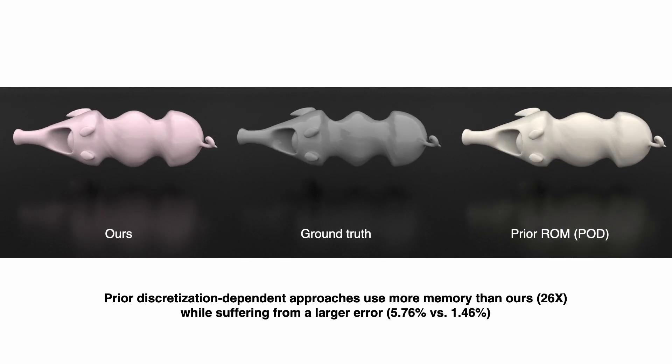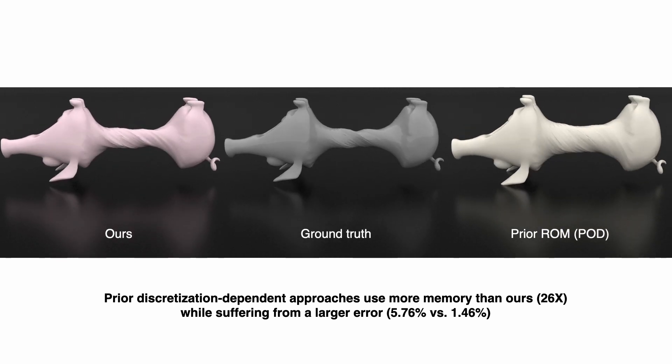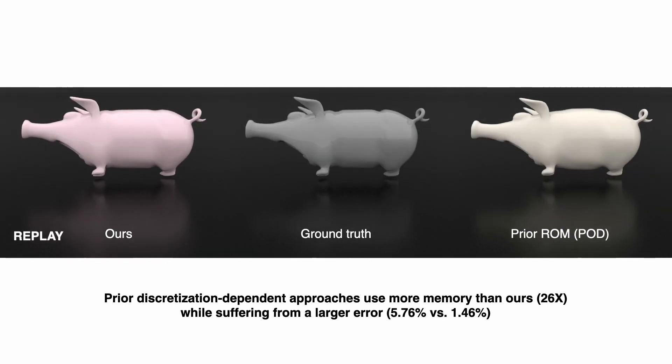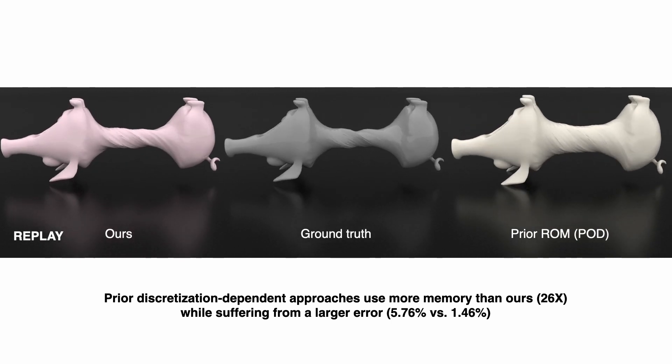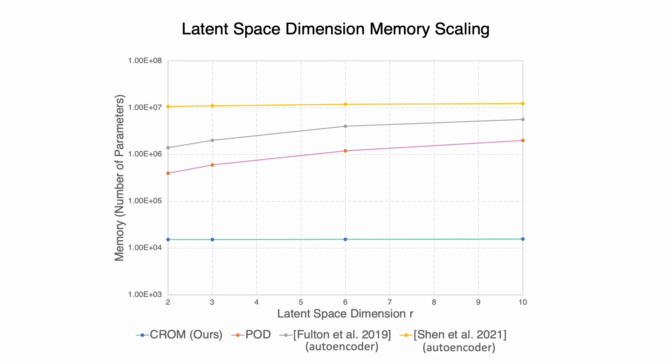Compared to our approach, prior discretization-dependent approaches used 26 times more memory than our method, while suffering from a larger error of 5.76%. Notably, our method scales favorably to the memory footprint of other methods, such as the autoencoder approaches of Fulton and Shen, even with increased size of latent space dimension R.